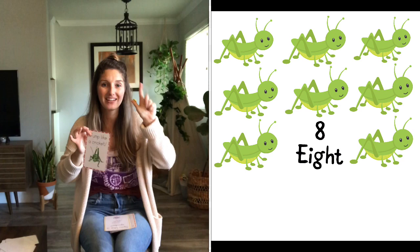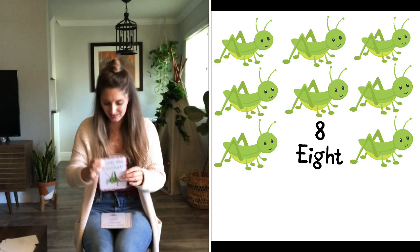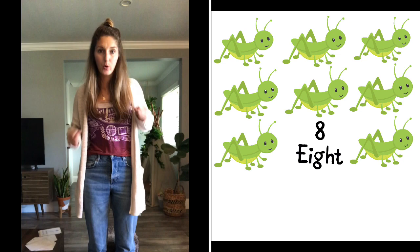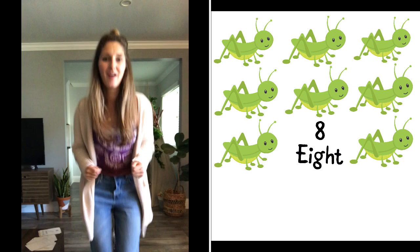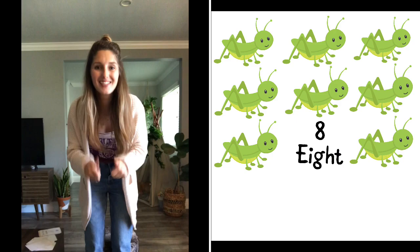Let's jump like a cricket eight times. So we get to stand up and we're going to jump. Ready? One, two, three, four, five, six, seven, eight. Great jumping. Sit back down. We're almost done. We have a few more.